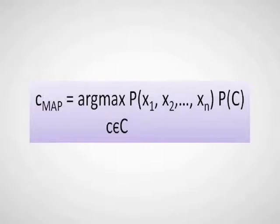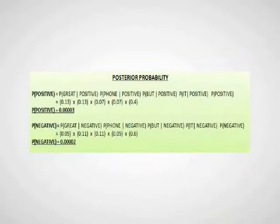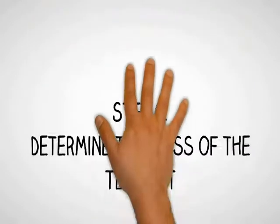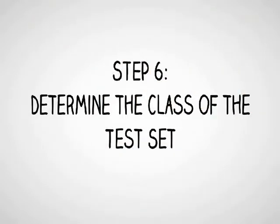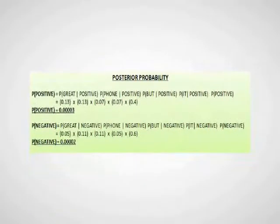Posterior probability of positive is 0.00003 and for negative is 0.00002. Step 6: Determine the class of the test set. Determine which of the probability of class in the posterior probability is the highest, and that will be the class of the test set. Probability of positive is higher than the probability of negative, therefore the class of the test set is positive. Now Ken decided to buy iPhone 4s.